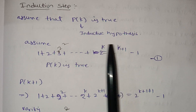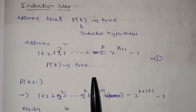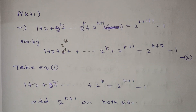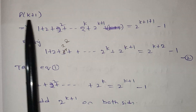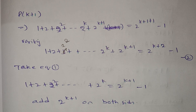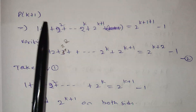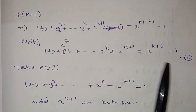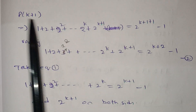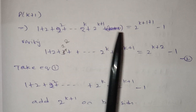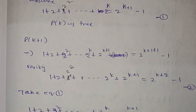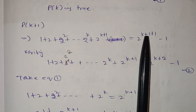We will prove P(k+1). We need to show: 1 + 2 + 2² + ... + 2^k + 2^(k+1) equals 2^(k+1+1) = 2^(k+2) − 1. Taking the LHS: 1 + 2 + 2² + ... + 2^k, plus 2^(k+1). In the RHS, substituting k+1, we get 2^(k+1+1) − 1.